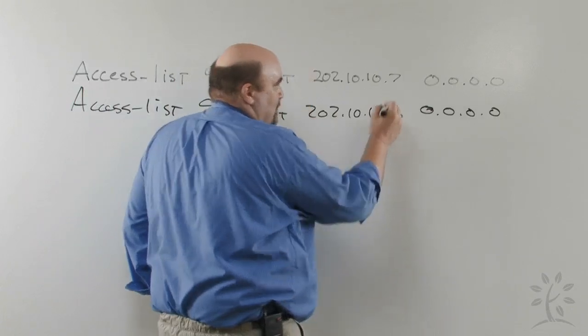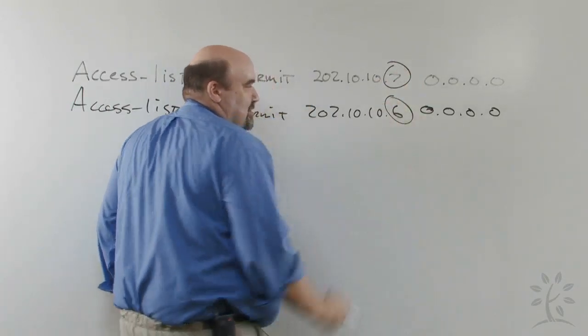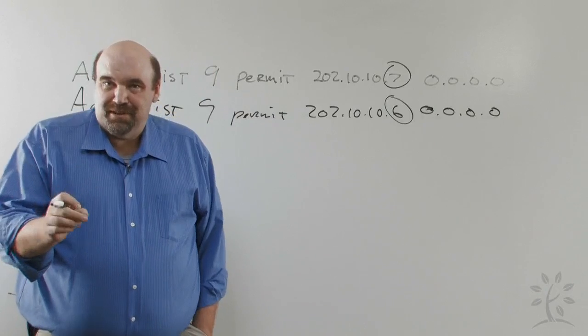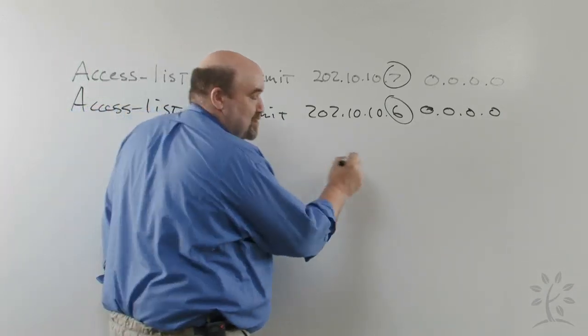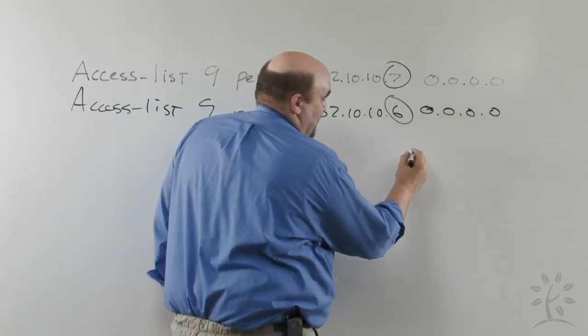It's very simple now to use a Wild Card Mask to make that happen. So what we're really looking at is the difference between these two access list line entries is the simple last number and the last octet. So what we need to do is break that down into its components and take a look at it.